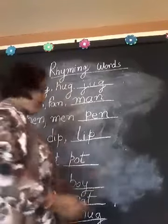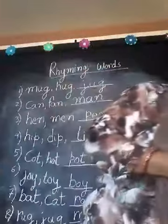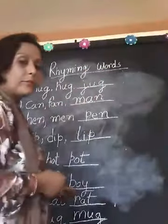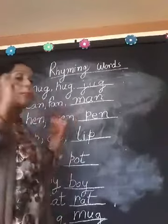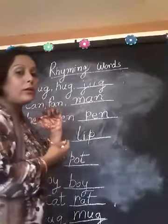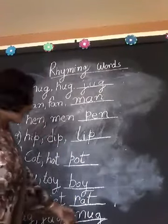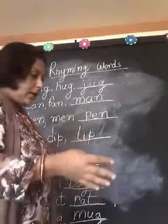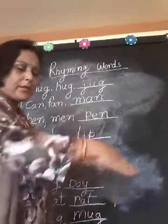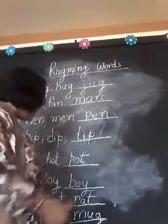Joy means to be happy. Toy is what you play with — cars, small cars, dolls, everything. Boy — you know, girl and boy. Bat is a cricket bat. Cat — meow, cat. Rat is a small rat. Rug means a kind of mat or small carpet. Jug you already know. Mug is the mug you use to take a bath.